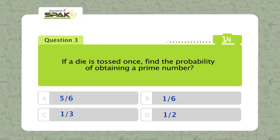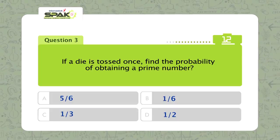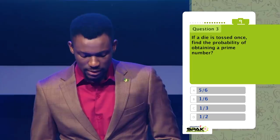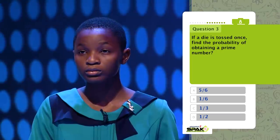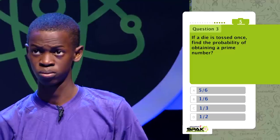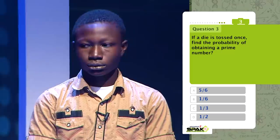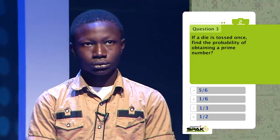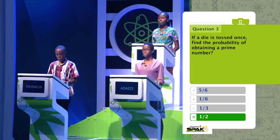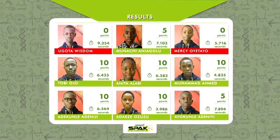If a die is tossed once, find the probability of obtaining a prime number. Is it 5 over 6, 1 over 6, 1 over 3, or 1 over 2? The correct option is D — half.